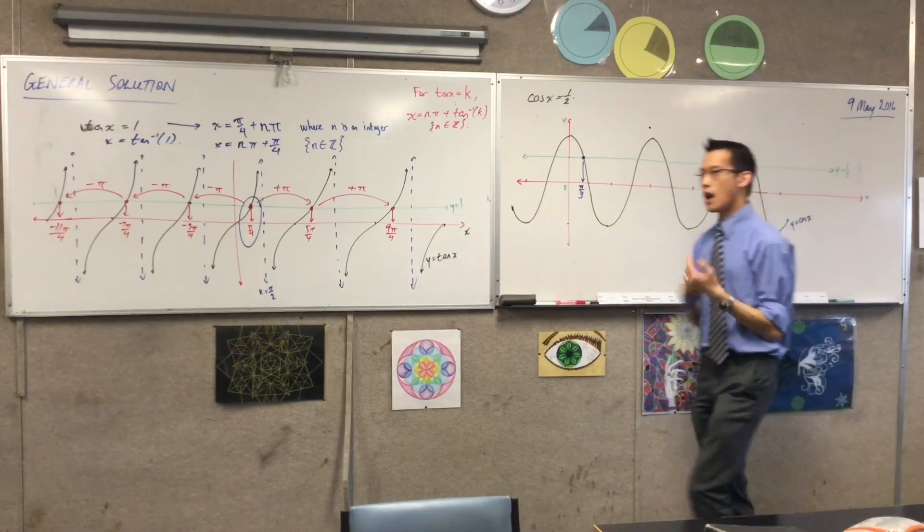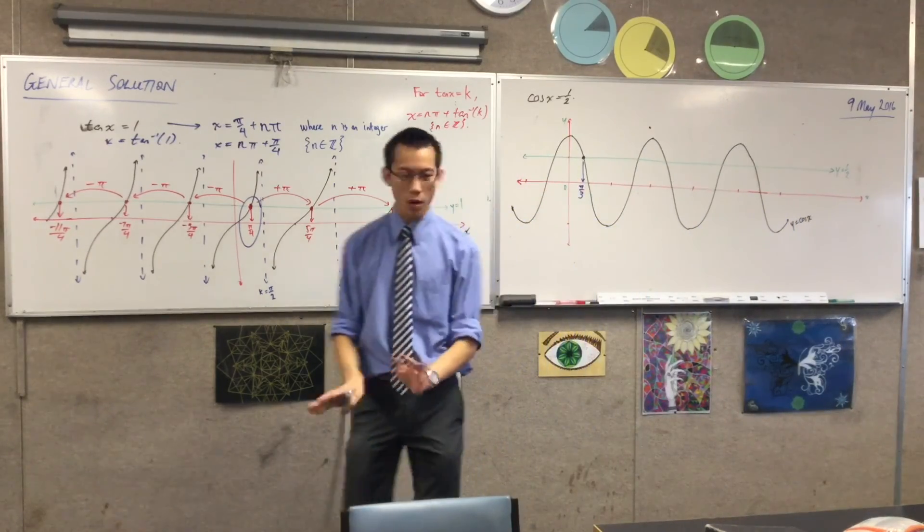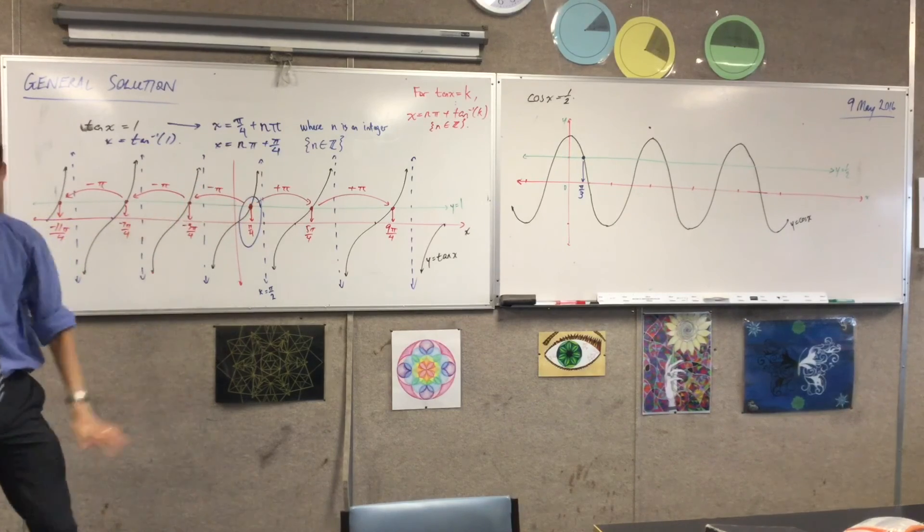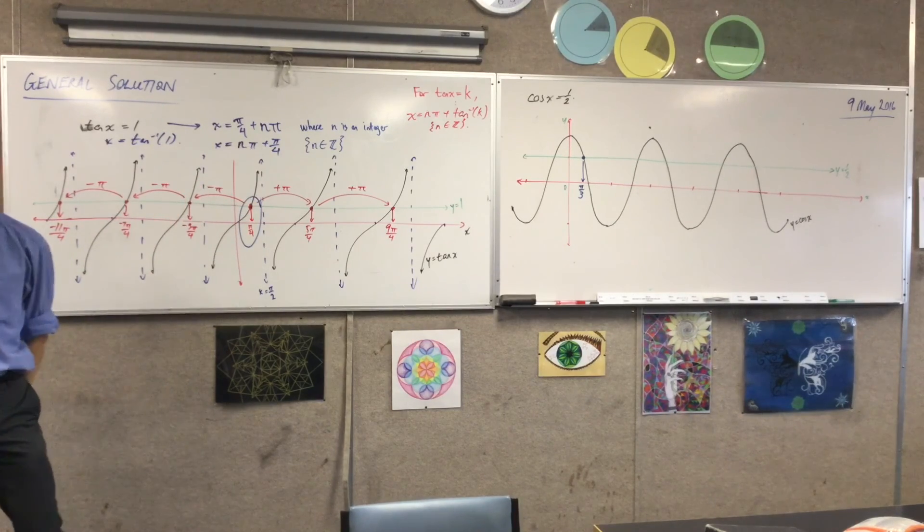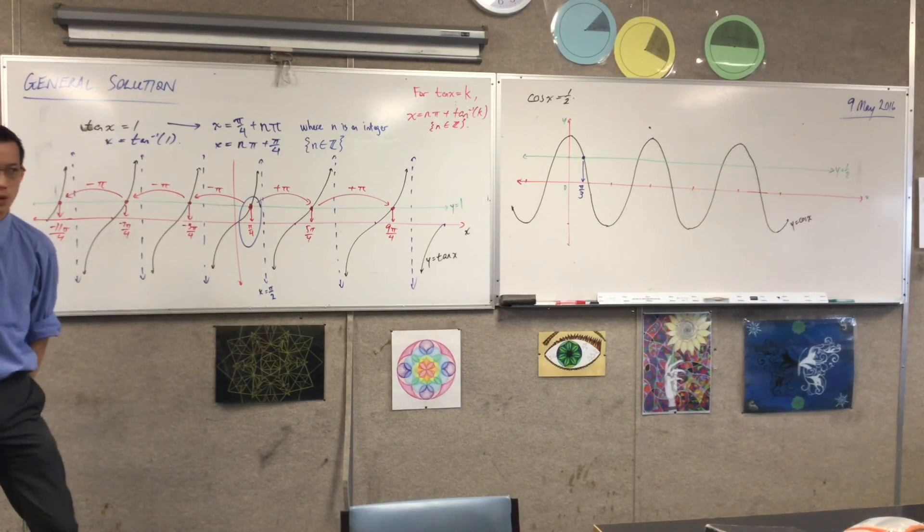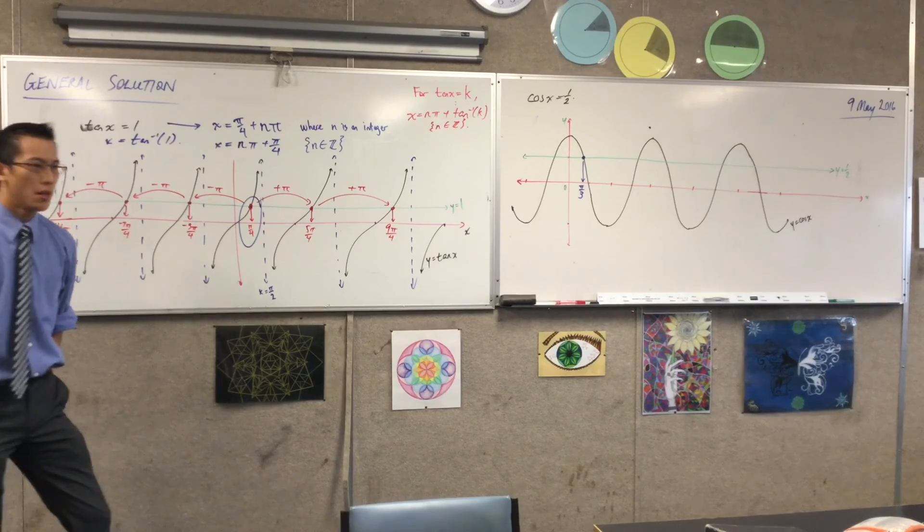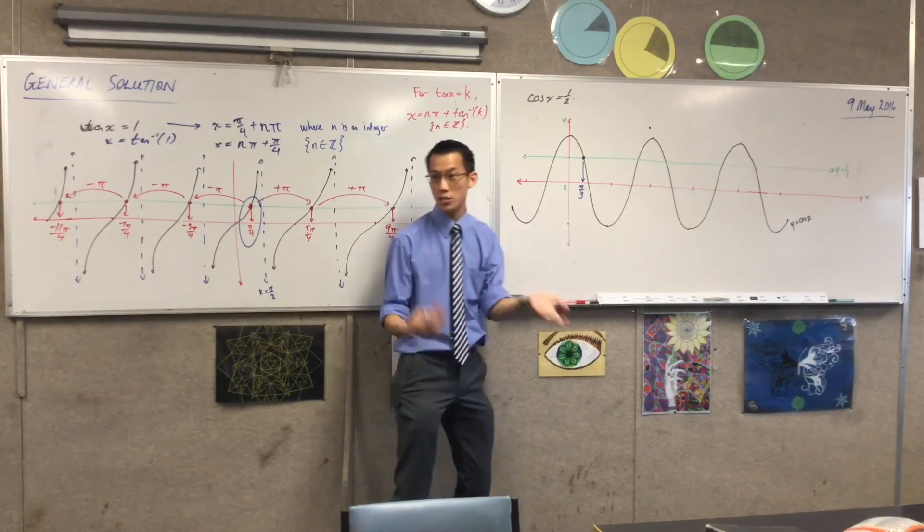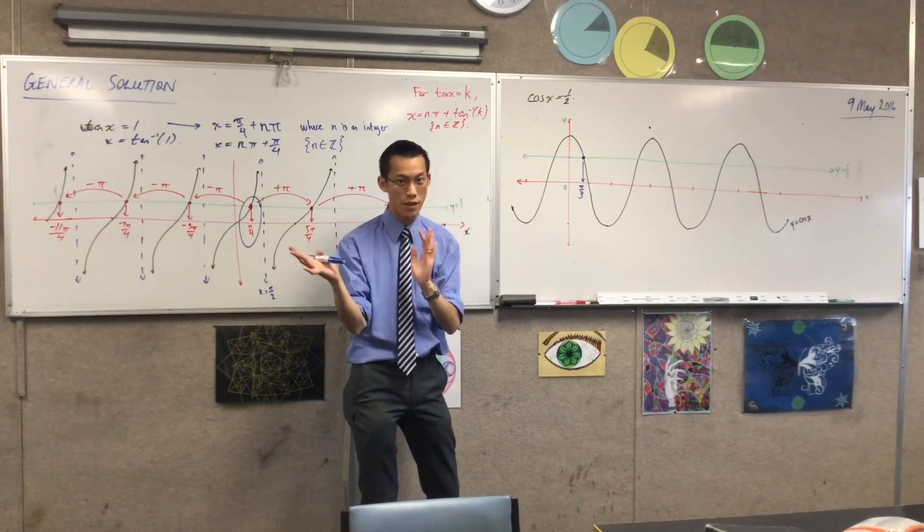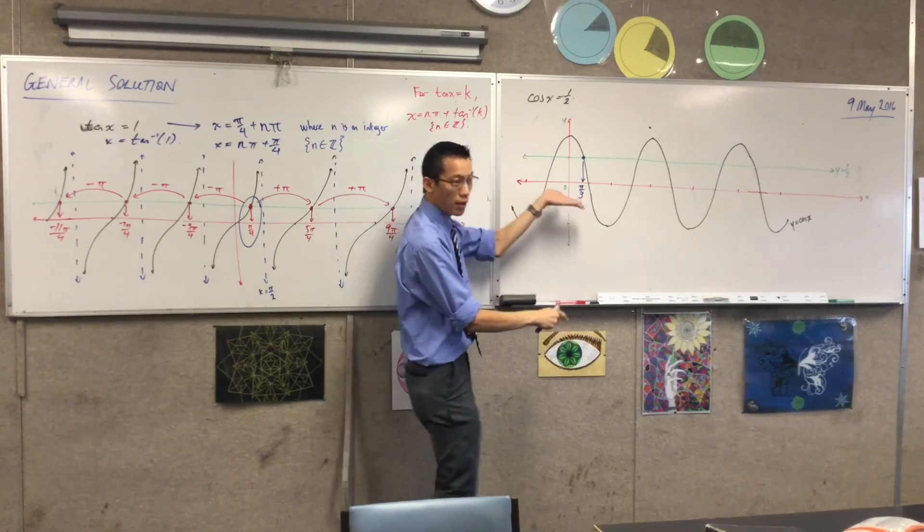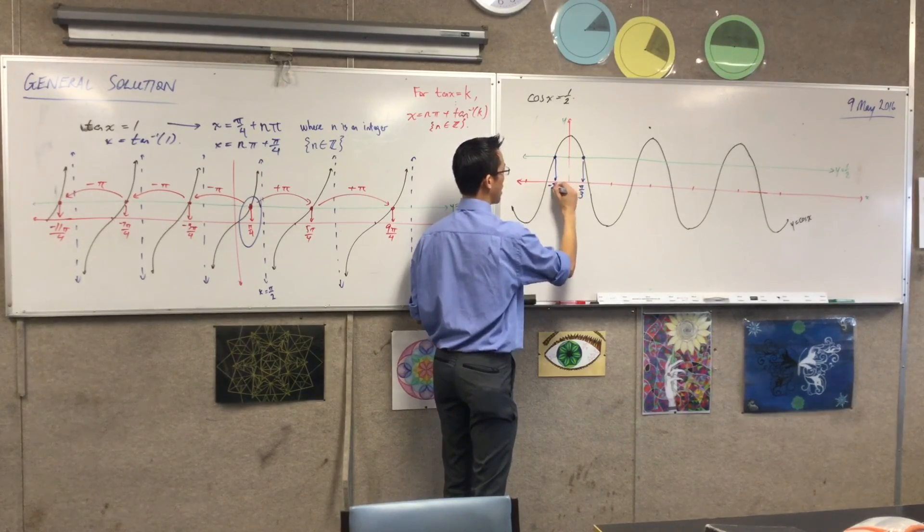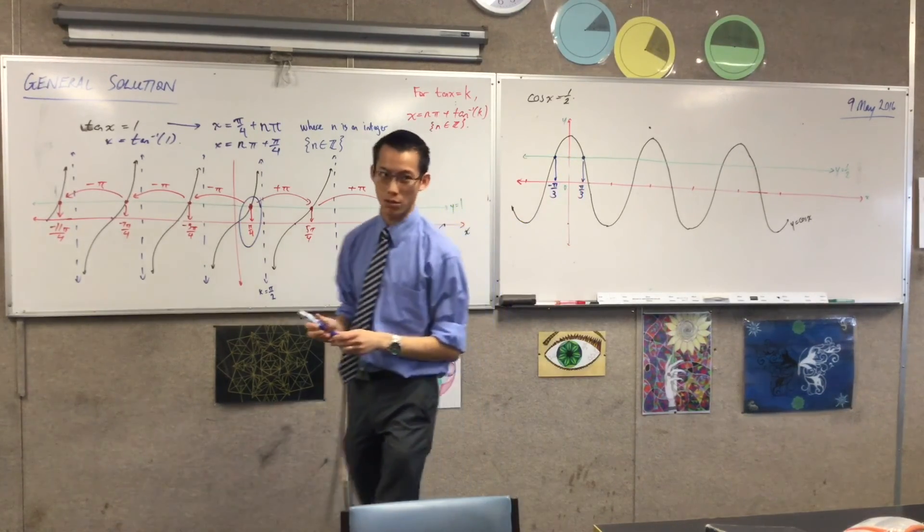Now, from there, I'm not going to fuss around with any more quadrants or anything like that. I'm just going to look at the graph and go from there. What's the nearest solution to π/3? The nearest one is the reflection, right? Now, the reason why, of course, is because cosine has what kind of symmetry? It's even. So, if π/3 is a solution, then negative π/3, you better believe, is also a solution.